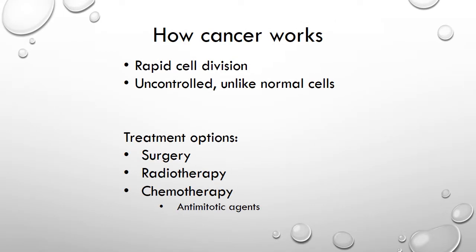Cancerous cells and tumors are characterized by their rapid cell division. These cancer cells are not controlled like normal cells, which stop dividing when they come into contact with other like cells. There are three treatment options for cancer: surgery, radiotherapy, and chemotherapy, including anti-mitotic agents. These chemotherapy drugs are dependent upon their ability to stop cell division. Since the microtubules of these cells can either not be assembled or disassembled, they die.